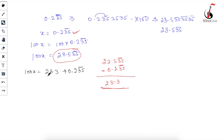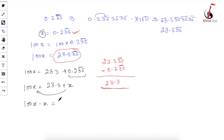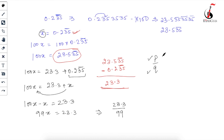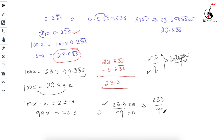Replace 0.235̄ with x: 100x = 23.3 + x. Bringing x to the left: 99x = 23.3, so x = 23.3/99. But this is not in proper p/q form because 23.3 is not an integer. To make the numerator an integer, multiply both numerator and denominator by 10: x = 233/990. That's your answer.